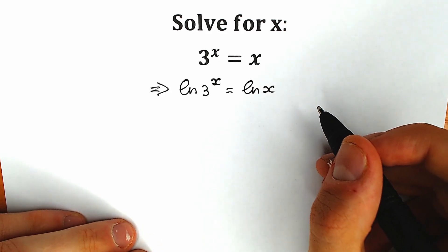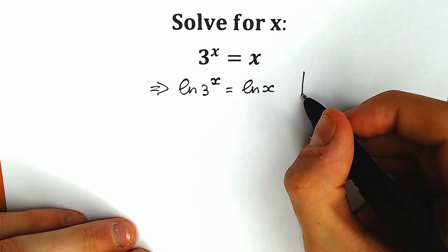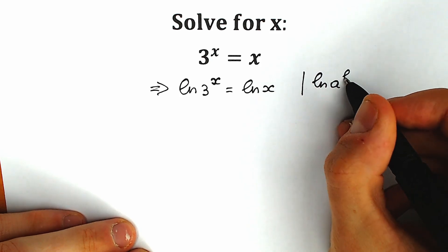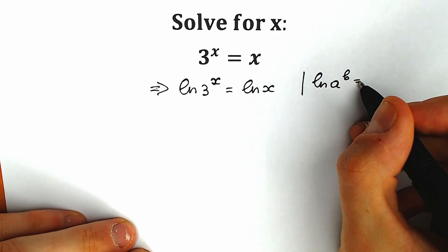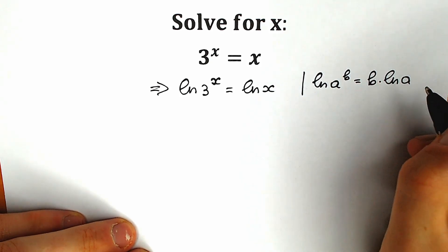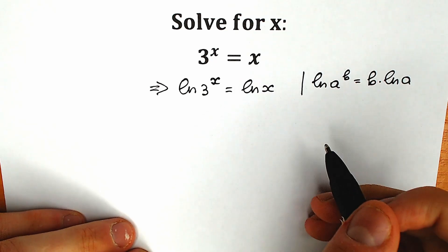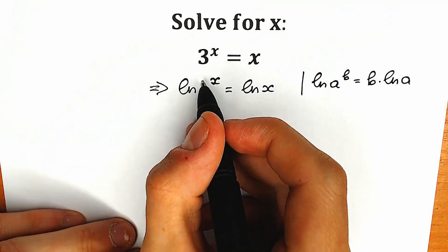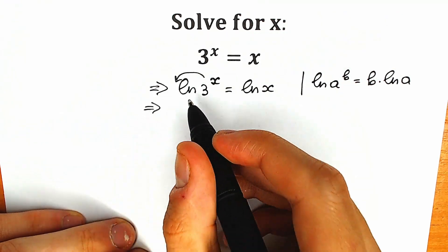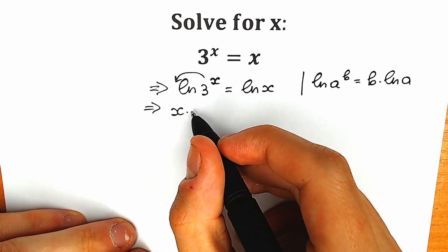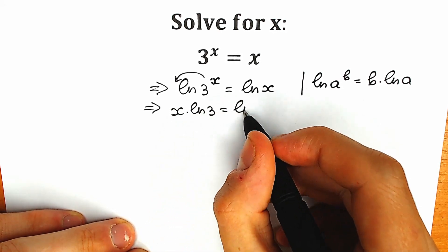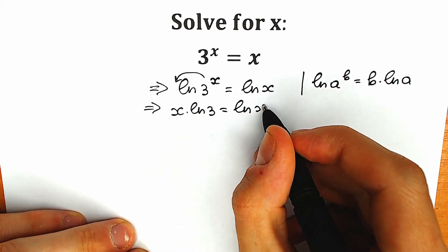This property looks like that — I hope everyone knows it. We have natural log of a to the power b, which we can write as b times natural log a. This is our property. So this x will come down, and as a result we have x times natural log 3 equal to natural log x.